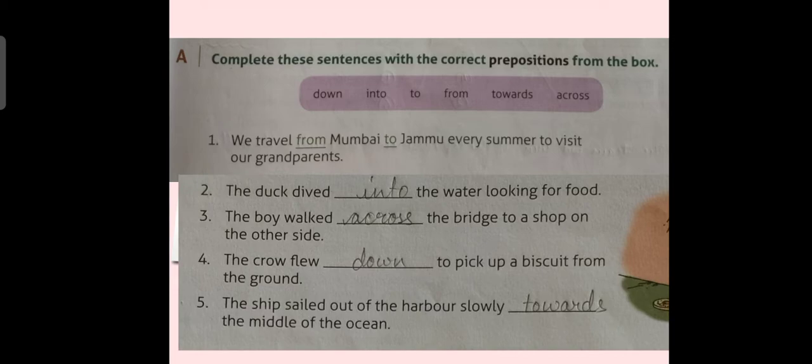Sentence number 3: the boy walked across the bridge to a shop on the other side. Here, in sentence number 3, we have used the preposition across to fill the blank. Sentence number 4: the crow flew down to pick up a biscuit from the ground. Here, in this blank, we have used the preposition down.